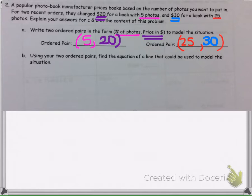Part B says, using those two ordered pairs, find the equation of a line that can model this situation. My equation of the line, I'm going to use y equals mx plus b. Since I'm using slope-intercept form, I need to first find the slope.